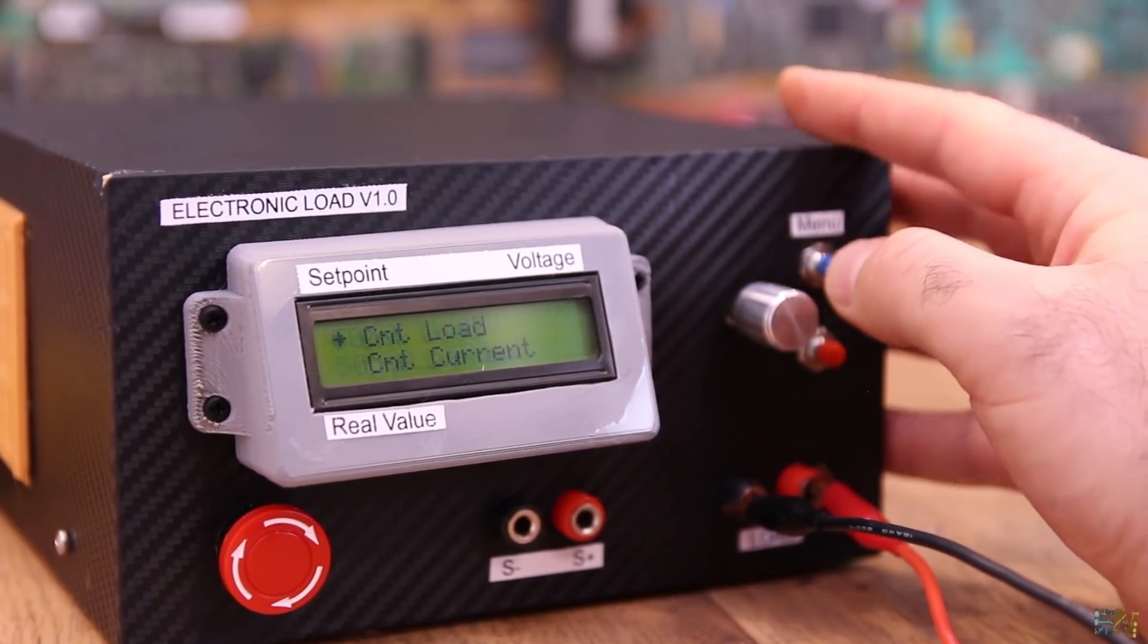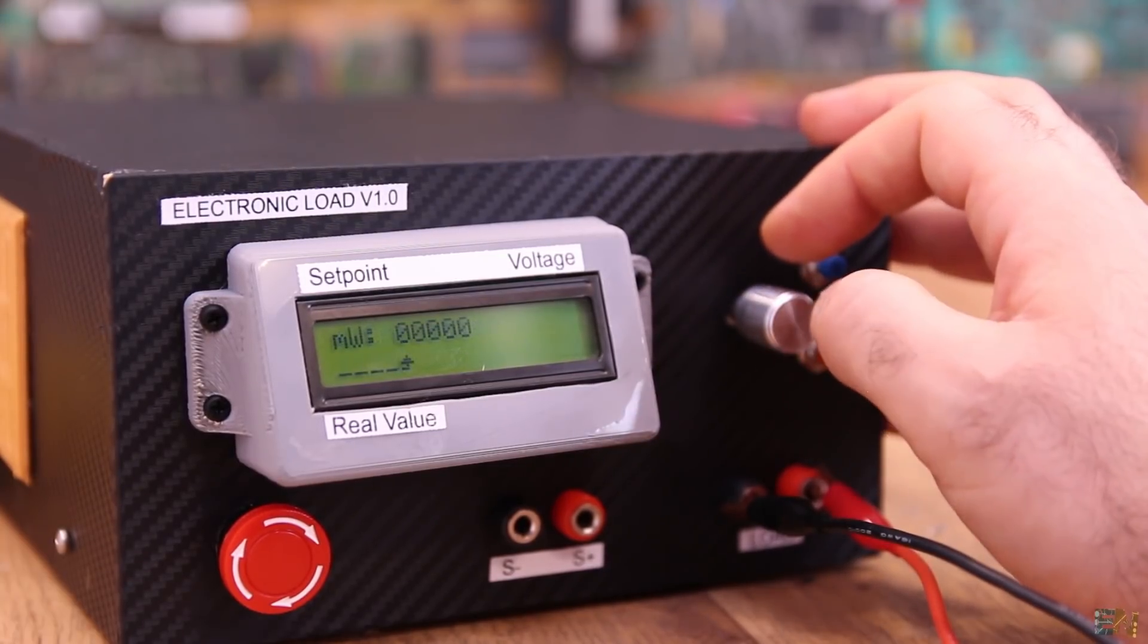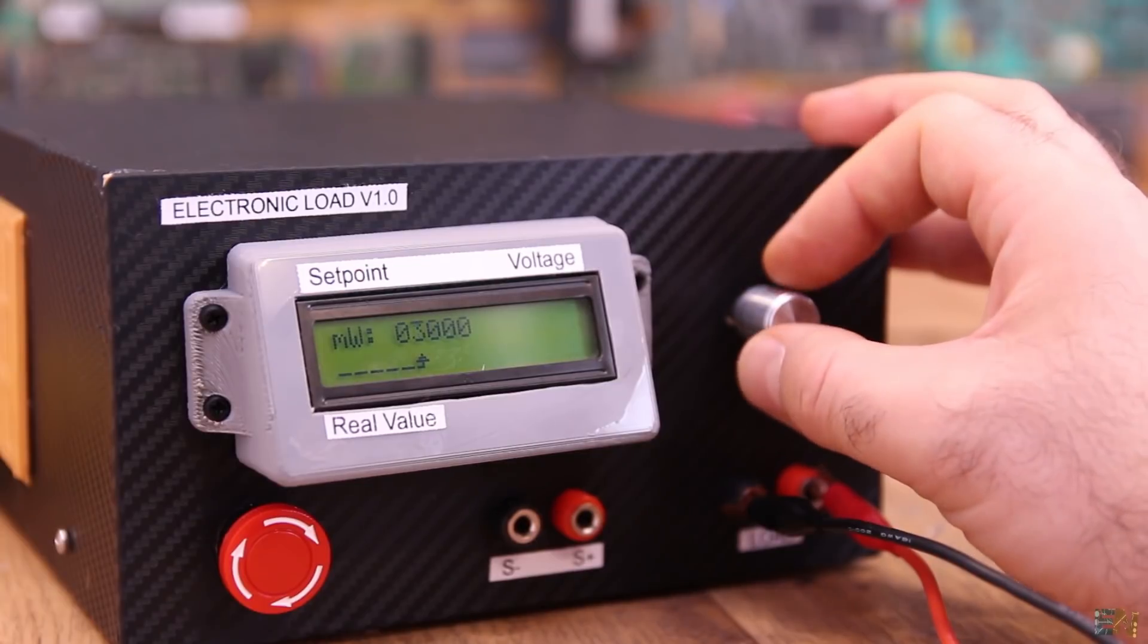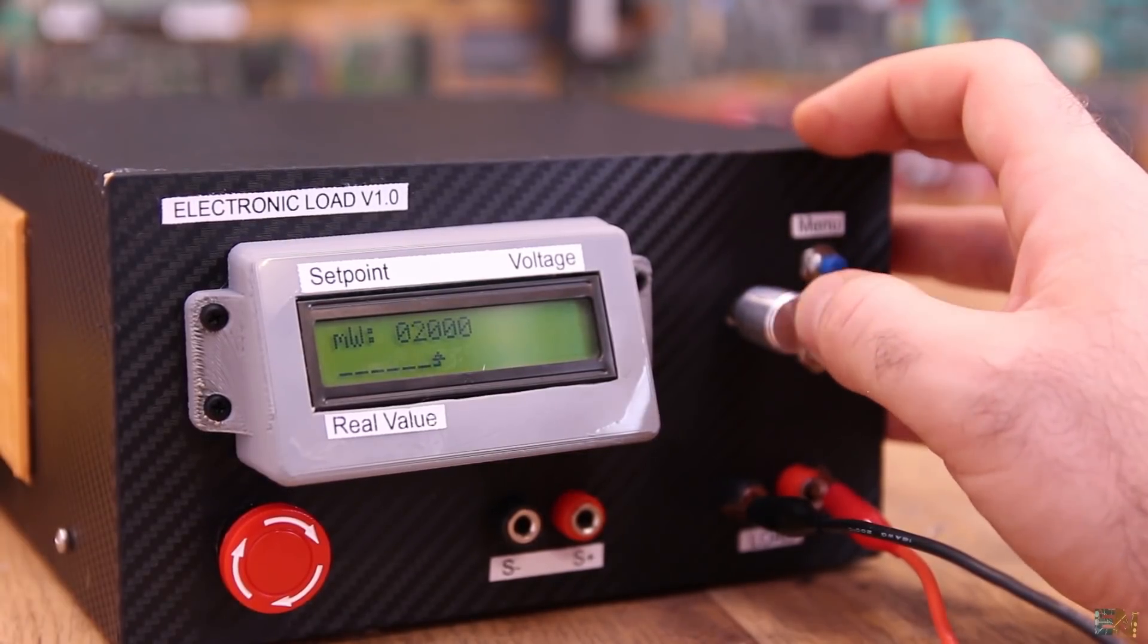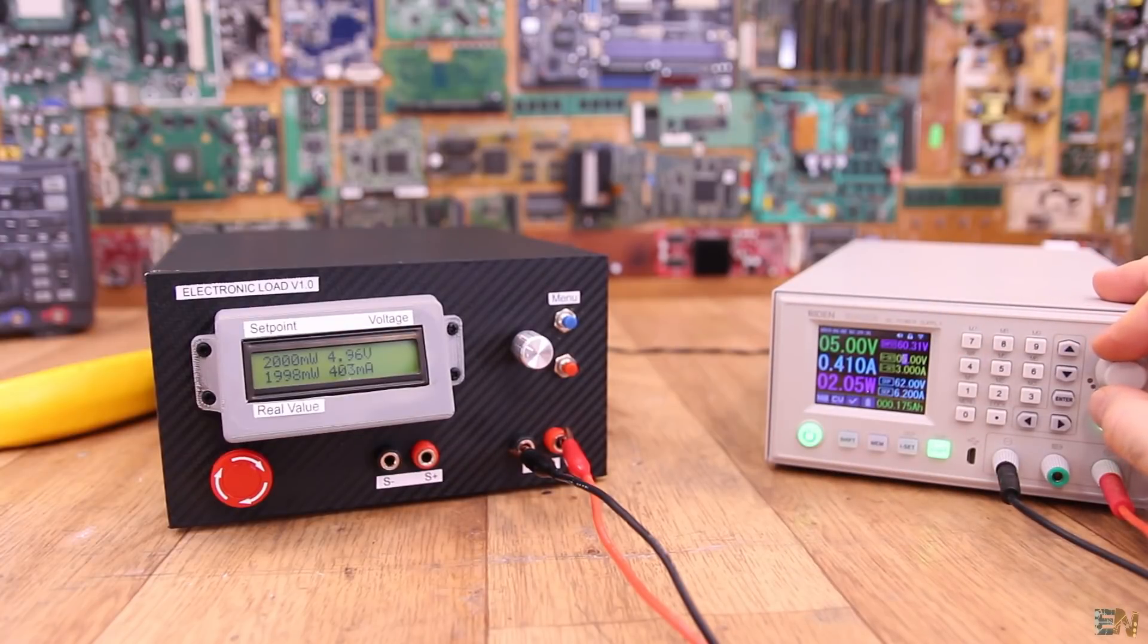Let's now go to the constant power mode. In this mode, depending on the input voltage, we increase or decrease the current value so we have always the same power. I set this to 2W and as you can see, I start changing the input voltage and the current will change automatically in such a way that the power is always 2W.